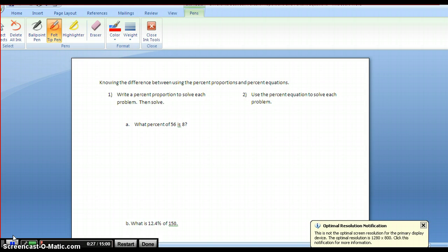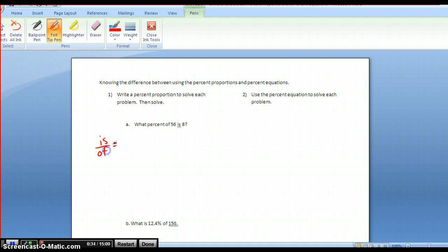The first question is, what percent of 56 is 8? Using a percent proportion, I use the is over the of equals the percent over 100. In this case, I have what percent, so immediately I put the what as my x over 100. What percent of 56—there's my denominator, the of. And the is 8 goes on the top. Now I cross multiply and solve for that, and that's using the percent proportion.